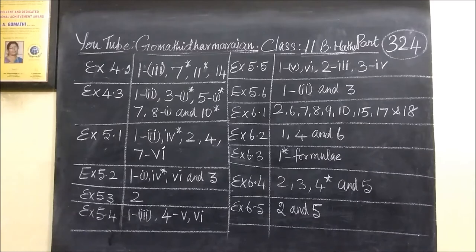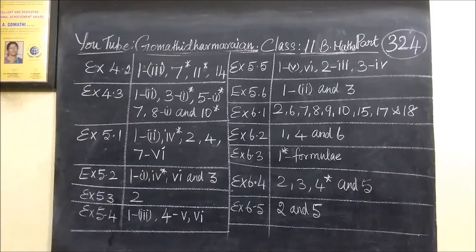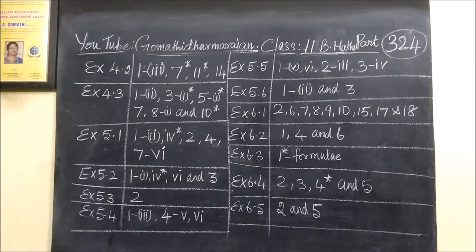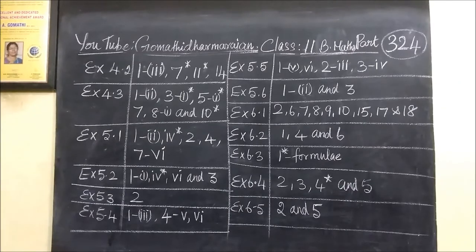Exercise 4.2, question 1, subdivision 3. Then questions 7, 11, and 14 — star refers to more important. Then exercise 4.3, questions 1, 2, 3, 1, 5, 1, then 7 and 8.